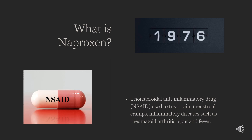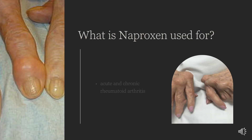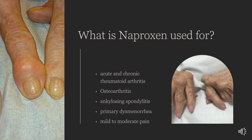Extended release formulations are more useful for the treatment of chronic or long-lasting conditions requiring long-term pain relief. Naproxen is indicated for the management of rheumatoid arthritis, osteoarthritis, ankylosing spondylitis, polyarticular juvenile idiopathic arthritis, tendonitis, bursitis, acute gout, primary dysmenorrhea, and mild to moderate pain. It is first-line therapy for osteoarthritis, acute gouty arthritis, dysmenorrhea, and musculoskeletal inflammation and pain.